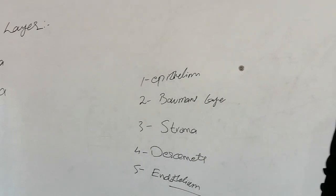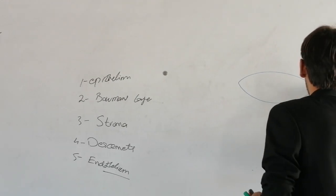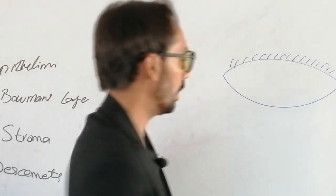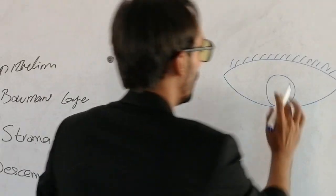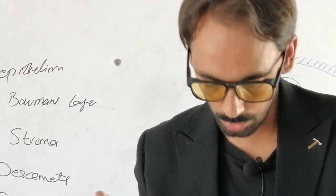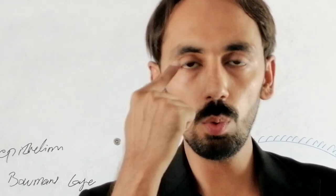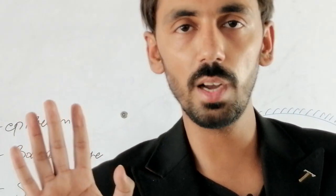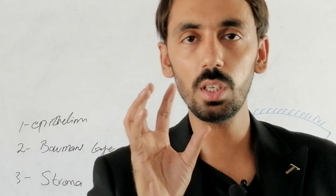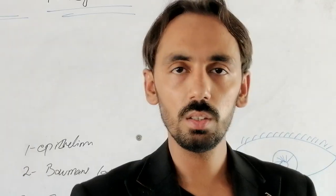If I take the frontal view of the eyeball — if you zoom into my eyes and come closer to the camera — you can see a colorful structure in my eyeball. The whitish part of the eyeball is the sclera. The roundish colorful structure is called the iris. And on the anterior surface of the iris, there is a transparent layer which is called the cornea.